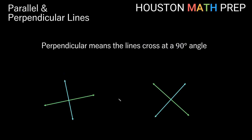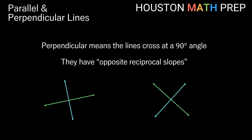Perpendicular lines cross at a 90-degree angle. Looking at the example on the left: one line goes up to the right, so it has a positive slope, but it's not very steep. The perpendicular line, as we travel to the right, is going down — so it has a negative slope, and it's very steep. The amount of slope is not the same, and the sign of the slope is different. For perpendicular lines, the slopes are opposite reciprocals.